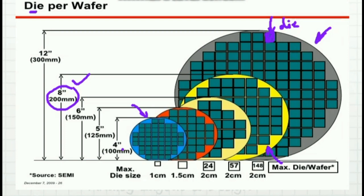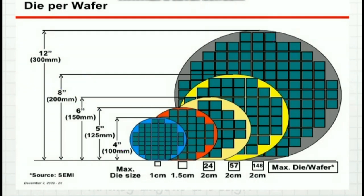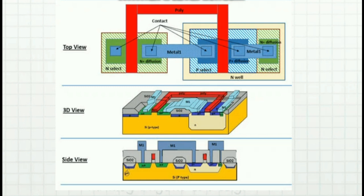Dies per wafer depends on our design. For example, if I have a 1 mm by 1 mm die, I will have many dies — assume 100. If I have a 2 mm by 2 mm die, it will be much, much lesser. Here we have a diagram of the CMOS inverter — the front view, the top view, and the isometric or 3D view. In the wafer, we do many modifications: we put an N-well, then a poly, metal, and silicon dioxide.